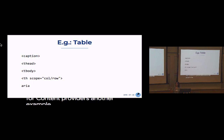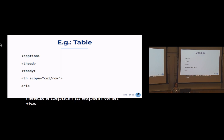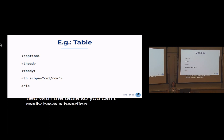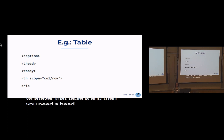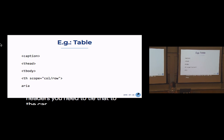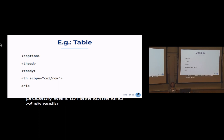Another example is tables — tables are particularly difficult. A table needs a caption to explain what it's about, and it needs to be tied to the table itself. You can't really use a heading for this, because then it just reads 'heading, whatever.' But if you put a caption, it will say 'table caption: whatever that table is.' You need a head, you need a body, and if you do have headers you need to tie them to the columns and rows, provide scope for the data, and you probably want ARIA labels peppered throughout.